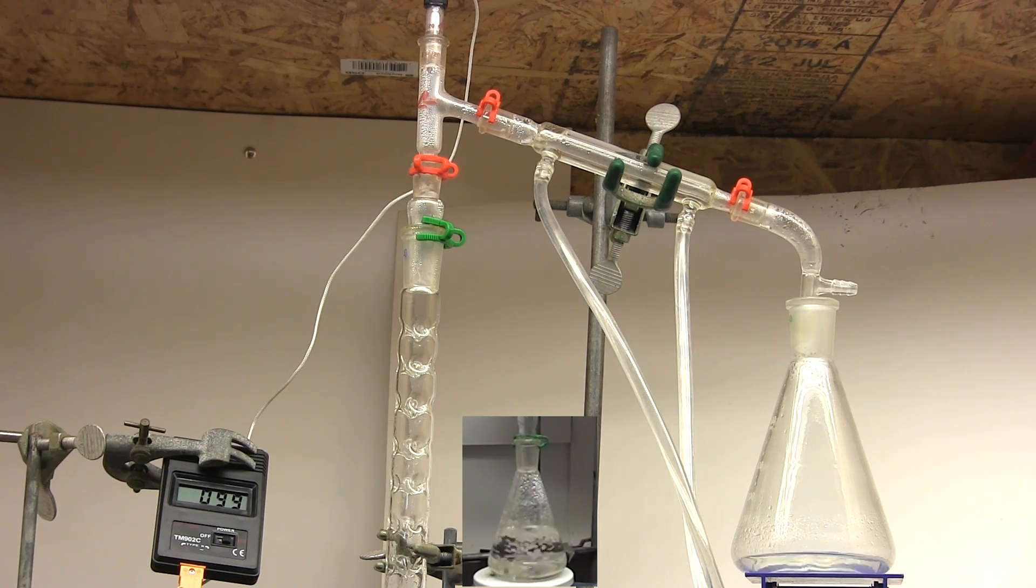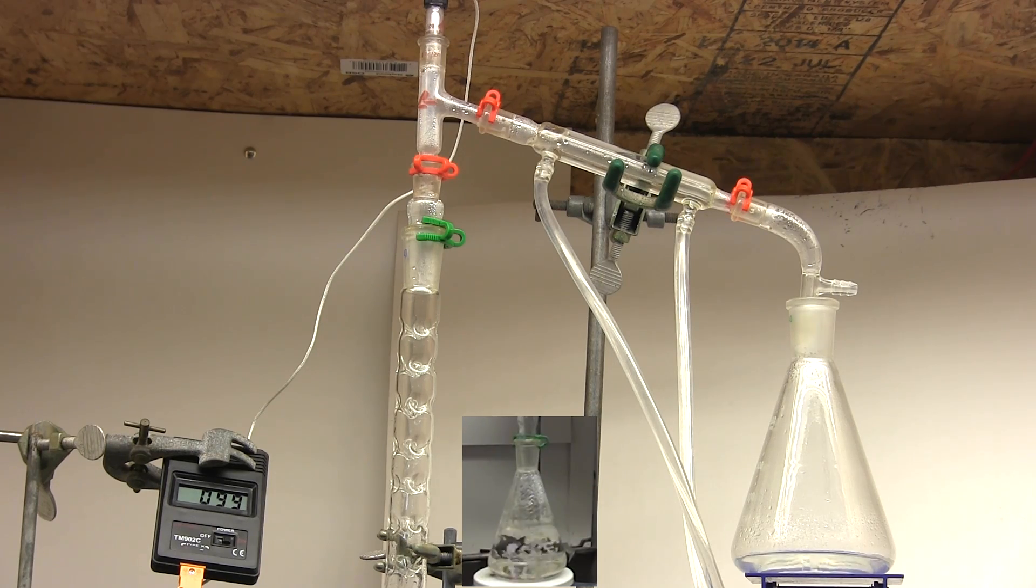If the temperature is constant it means we're distilling off one clean component or an azeotrope, which I'll explain later. If the temperature is changing then we're transitioning between two components.